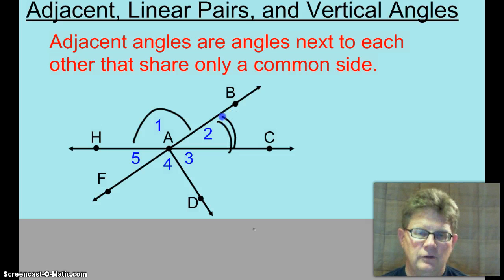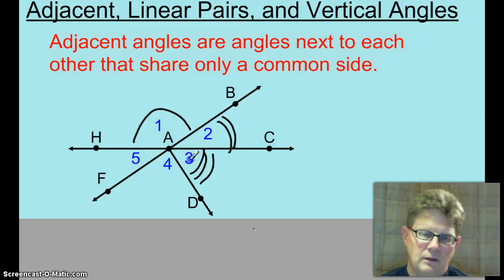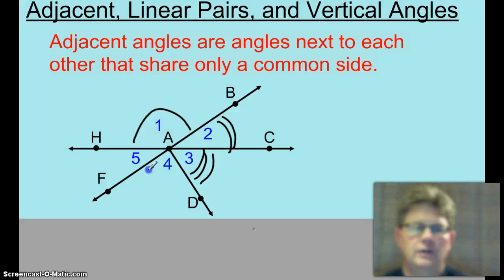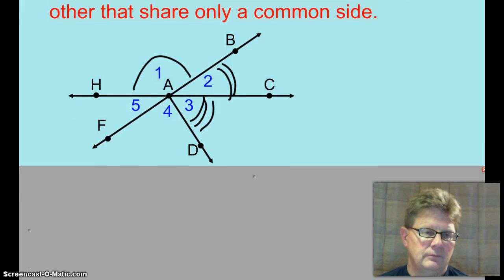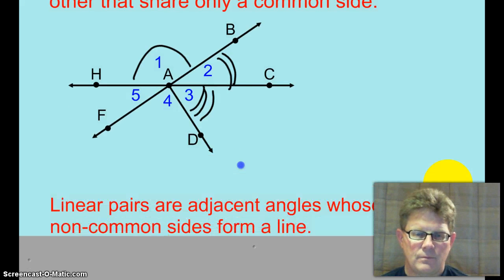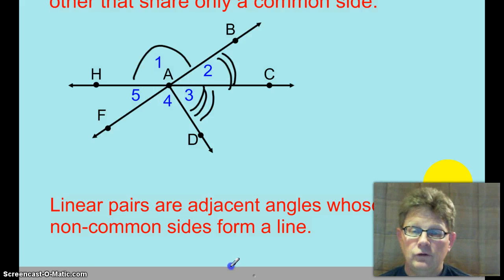Probably should put two arc marks there to show you that these two are not congruent to each other. Okay, angle 2 and angle 3, they are adjacent to each other. They share ray AC in common. Likewise, 3 and 4 are adjacent to each other. 4 and 5 are adjacent to each other.